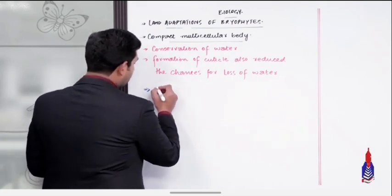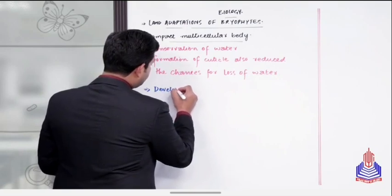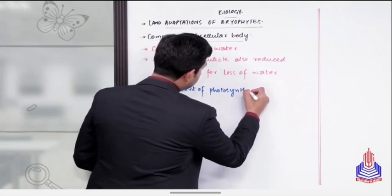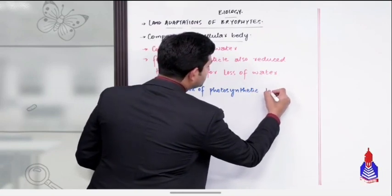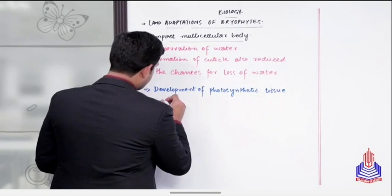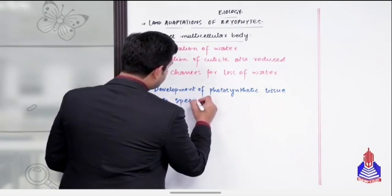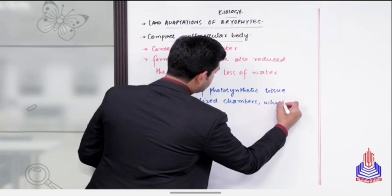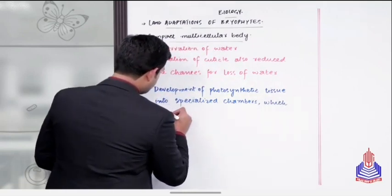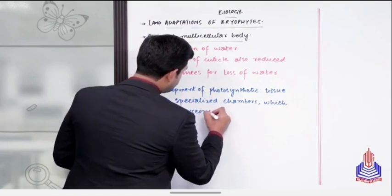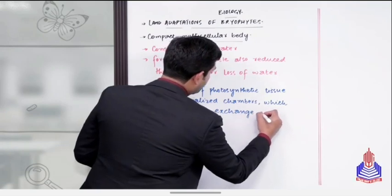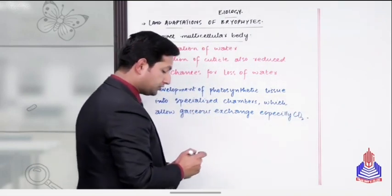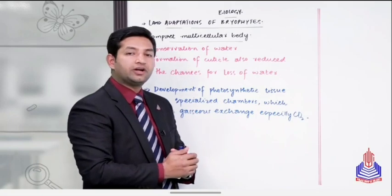All right students, this is its first adaptation. And then if we look further, we see another structural change. Anatomically they were also changing. This is the development of photosynthetic tissue into specialized chambers which allow the gaseous exchange, especially carbon dioxide.